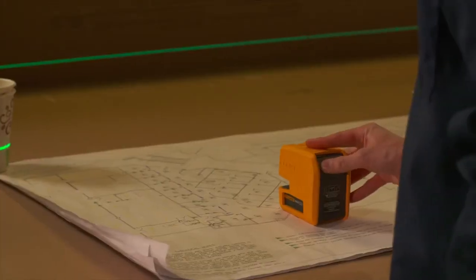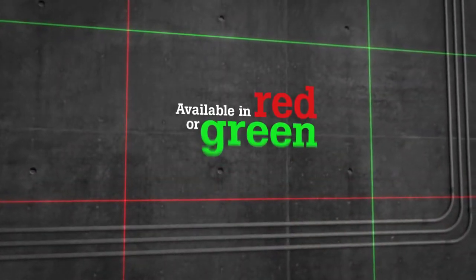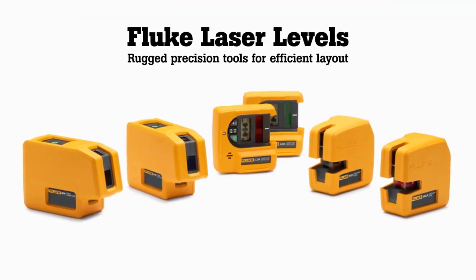Built to exacting Fluke standards, our laser levels are tested to survive a one-meter drop, and both the point-to-point and line laser levels are available in red and green, so you can get the job done no matter what condition you're working in.